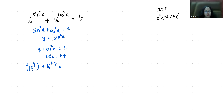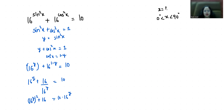Now 16^y plus 16 divided by 16^y equals 10. If we take the substitution z equals 16^y, it becomes z plus 16 divided by z equals 10, which gives us z² plus 16 equals 10z.